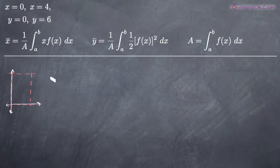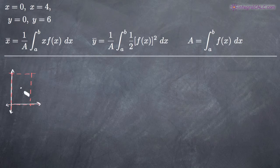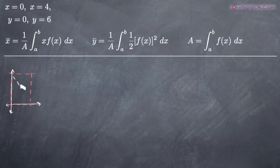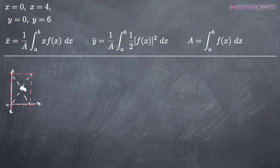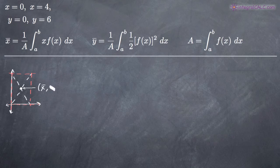The centroid of a plane region is the coordinates of the geometrical center of the region. So in the case of a rectangle, we can pretty much eyeball that. It's halfway between the vertical sides and halfway between the horizontal sides. If we draw diagonals through the center of the rectangle, we know that our center is right about here. The centroid is going to be the coordinates of that point, written as x-bar, y-bar.